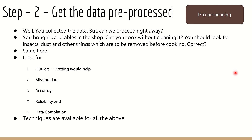The second step is pre-processing. Think of it like vegetables bought from the market — you cannot cook them right away, you need to clean them, remove insects, dust, and so on. Same is the case here. When we collect data, there could be missing data, accuracy issues, reliability issues, outliers, and repetition. All these are to be removed. Outliers should be properly handled, missing data should be addressed, and repeated entries for the same entity must be resolved. This process is called pre-processing — getting the data ready for further processing.